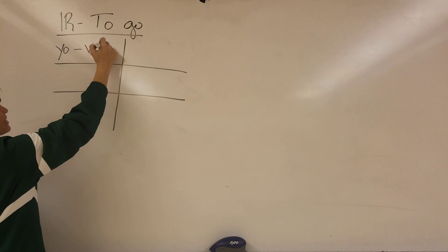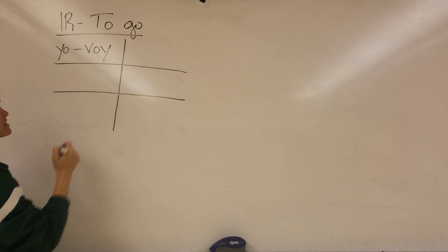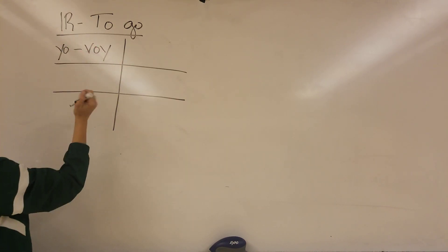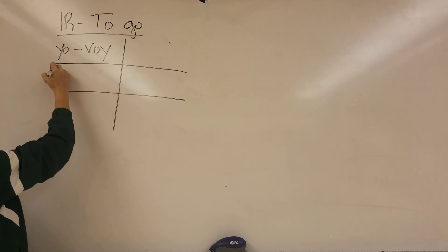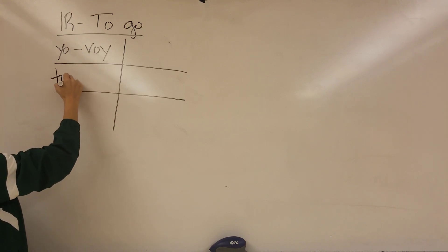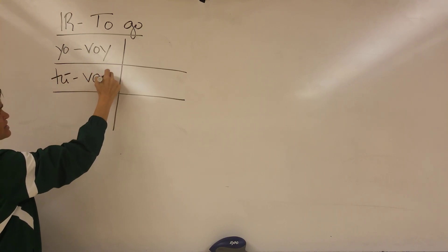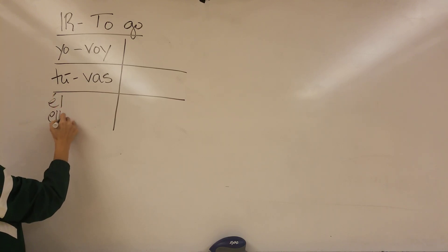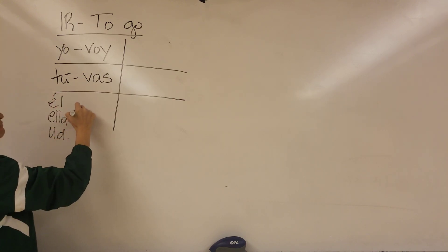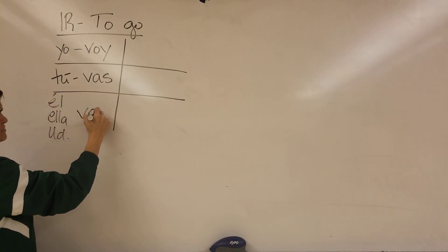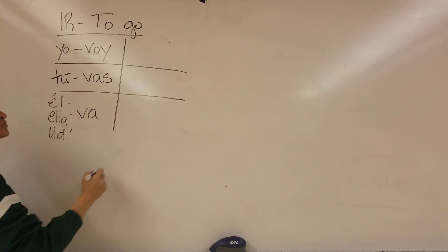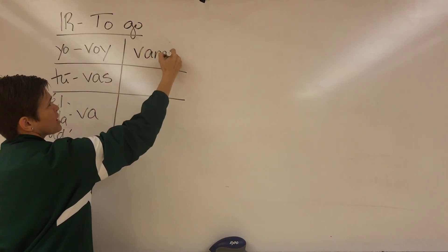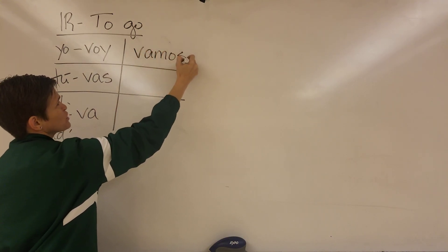If I want to say that I go somewhere, it's yo voy. So it has nothing to do with ir, but we're just going to memorize it. Yo voy means I go. Tú vas means you go. El, ella, usted va means he, she, or you go. Nosotros vamos is we go.